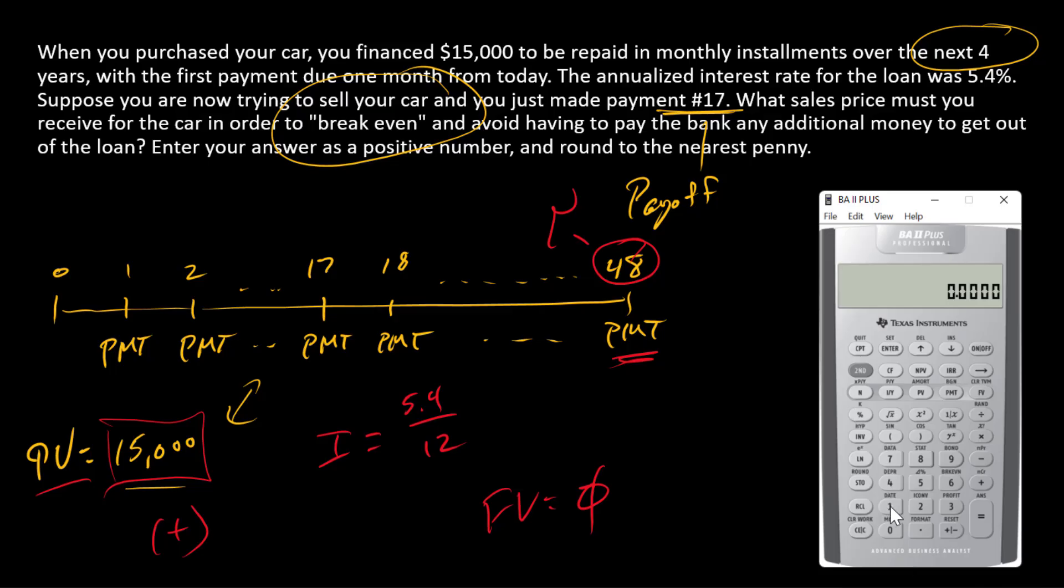So on my financial calculator, I'll just input these one at a time. Here's my $15,000 going into PV. 0 FV, 48 N, and then 5.4 divided by 12 equals I. Okay, I can compute my payment, and there's our starting point.